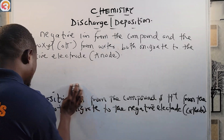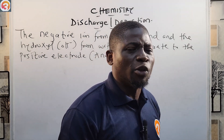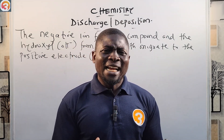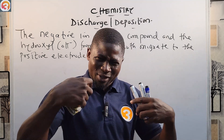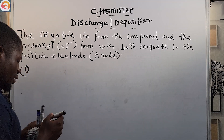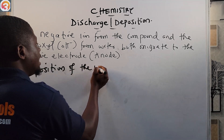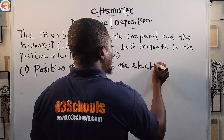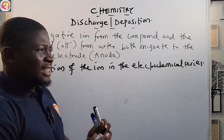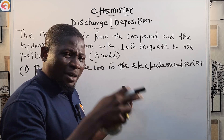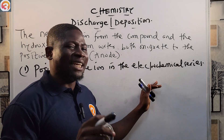It is very important to know that there are factors that govern the discharge of an ion during electrolysis. There are three main factors. Factor one is the position of the ion in the electrochemical series.